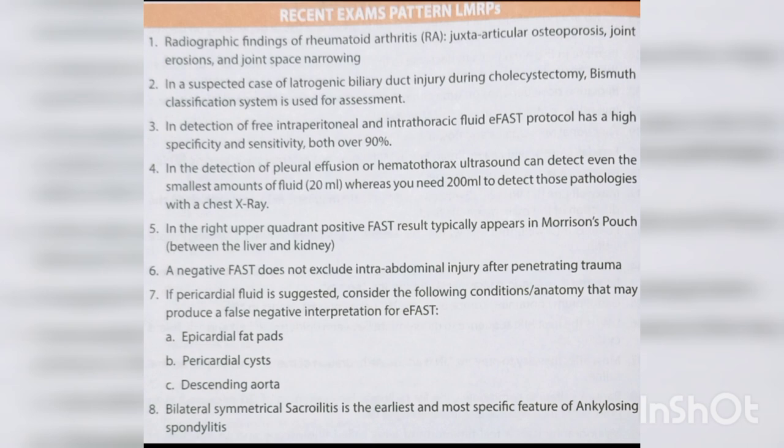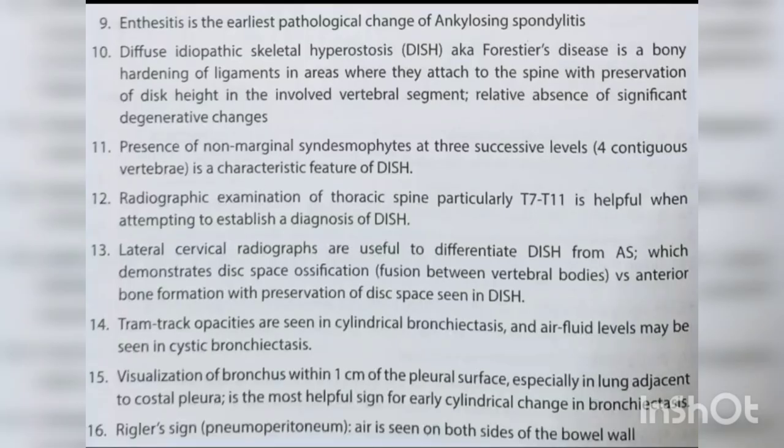Descending aorta — bilateral symmetrical sacroiliitis is the earliest and most specific feature of ankylosing spondylitis. Enthesitis is the earliest pathological change of ankylosing spondylitis.